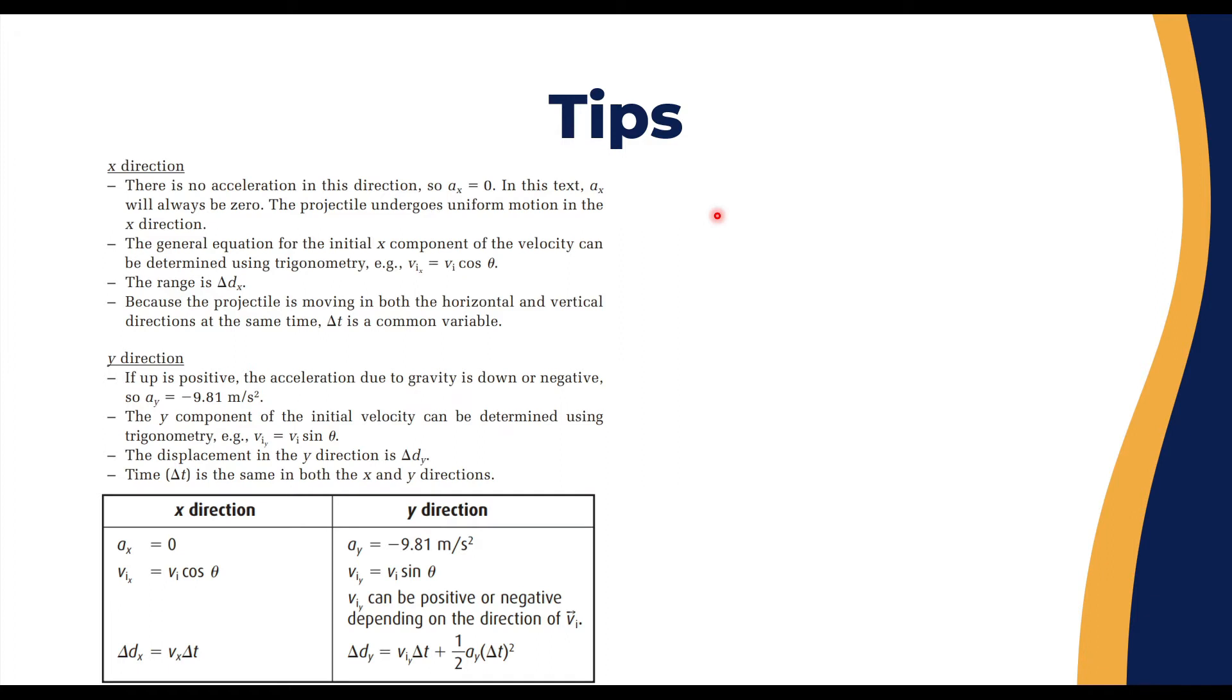The y-component of the initial velocity can be determined using trigonometry: v_iy equals v_i sin θ. You need to be careful about whether it's going upwards or downwards to decide the right sign. The displacement in the y-direction is Δd_y, and time is Δt for both x and y.